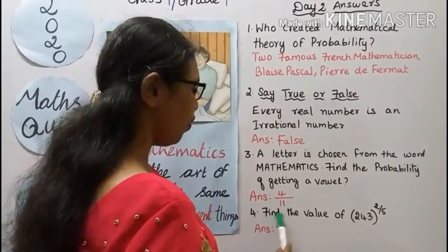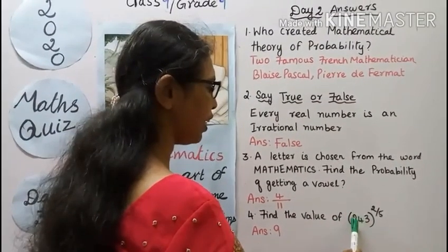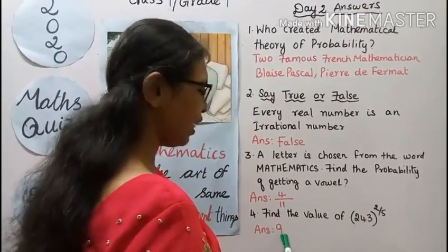Fourth question, find the value of 243, the whole power 2 by 5. Answer: 9.